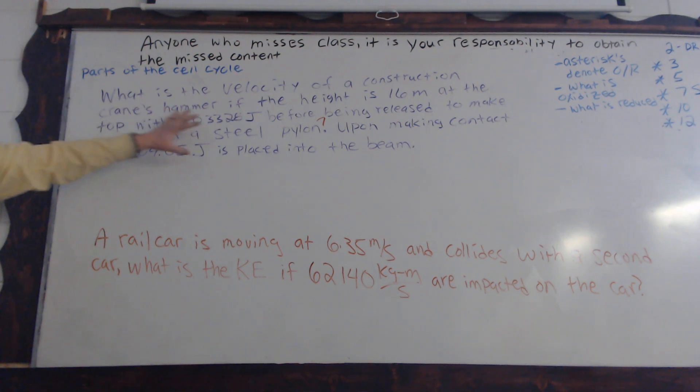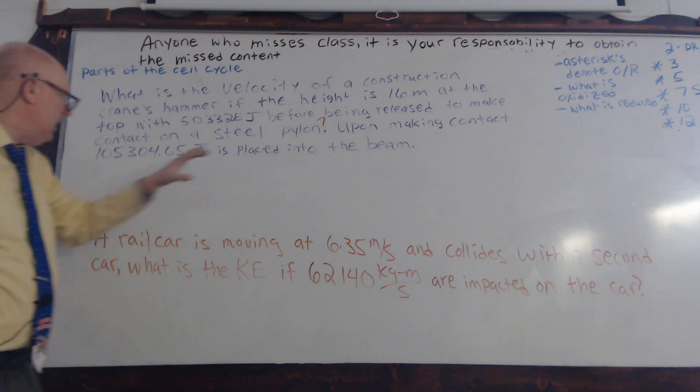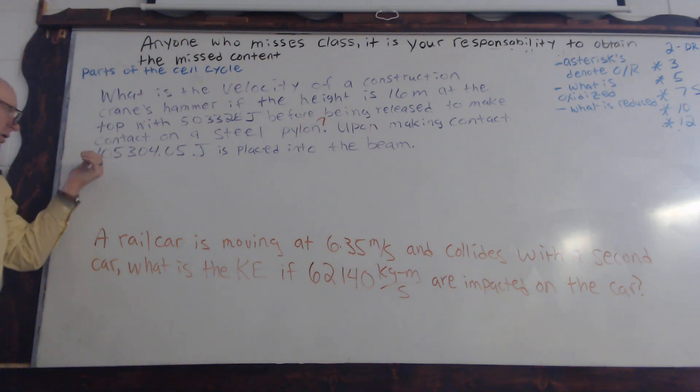So that steel pylon is what we're driving into the ground, then upon making contact with 105,304.05 joules is placed into the beam. Okay? So you've read the problem for the 37th time. Are we getting better at this by the 37th time? A little bit. We are? Yeah. Okay.